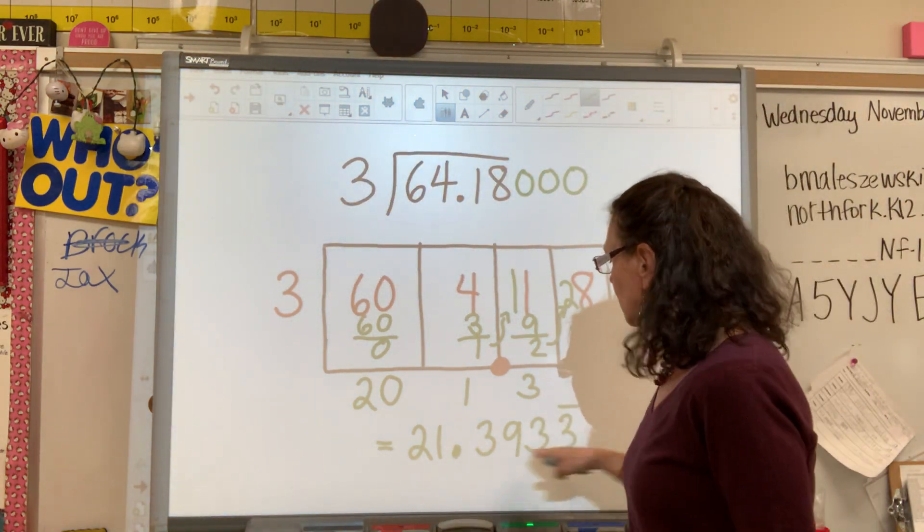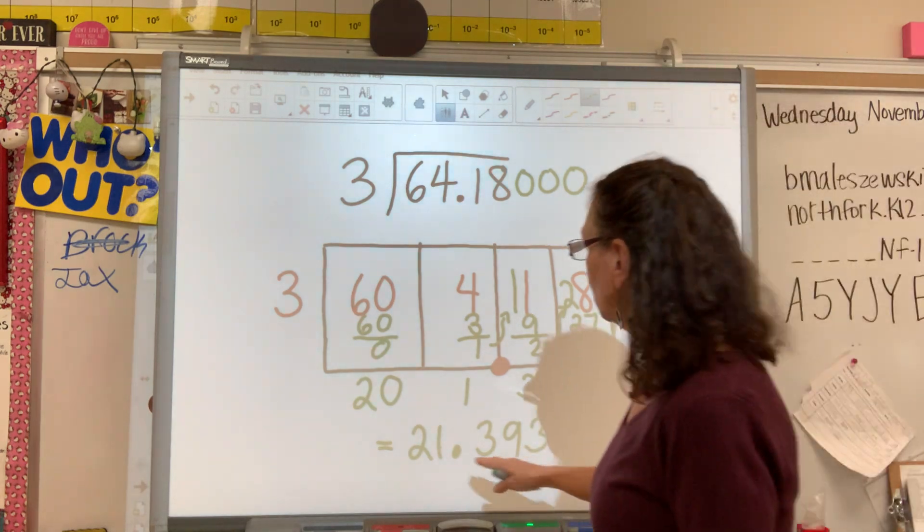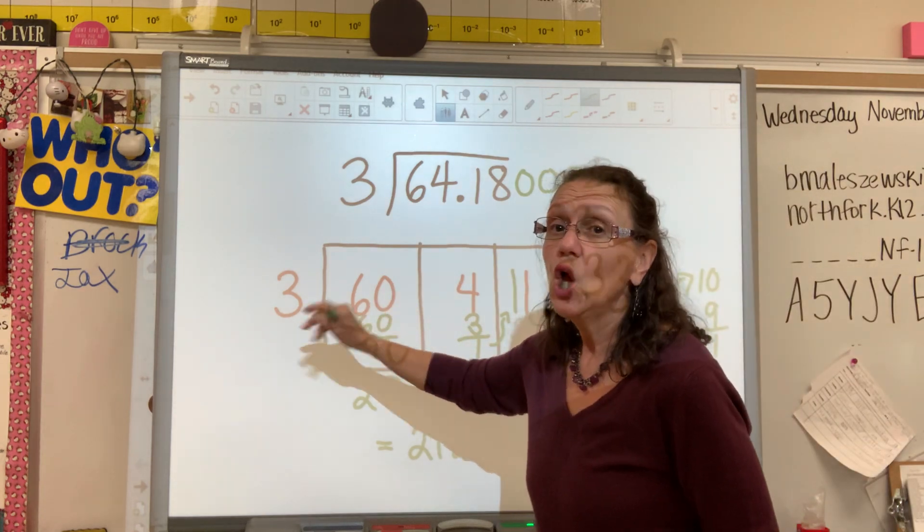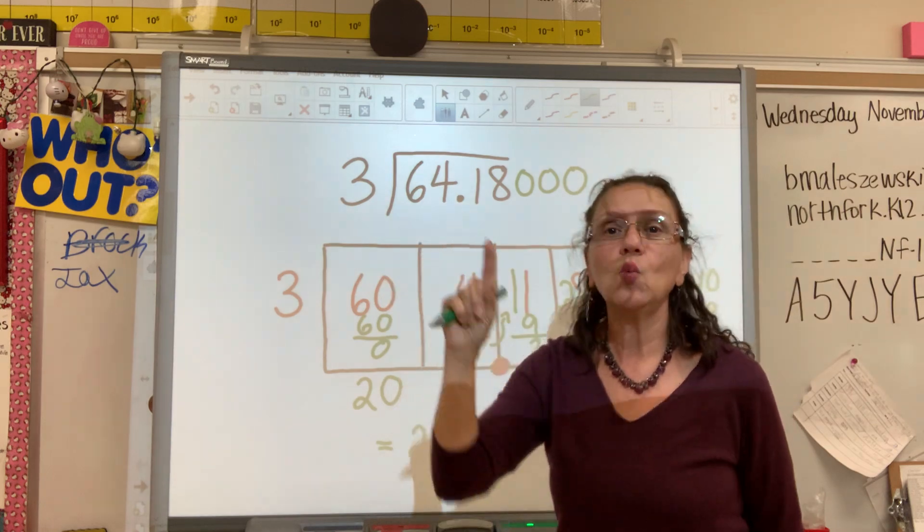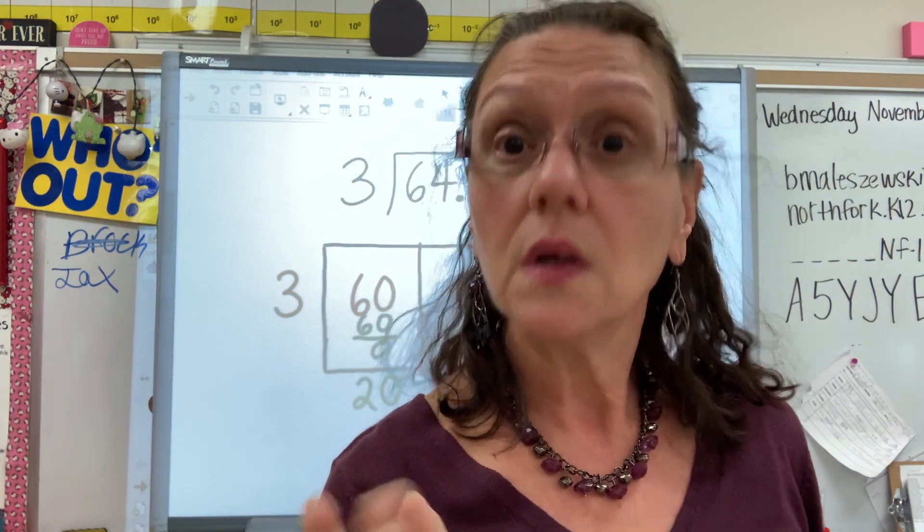So this is my quotient. And if you check it with multiplication, if you multiply 21 and 393 thousandths by three, you will not get exactly this answer, but you will get very, very, very close. And with decimals, close is okay.